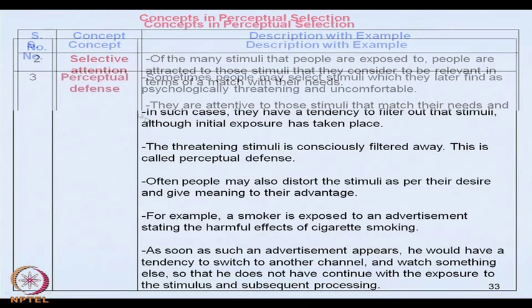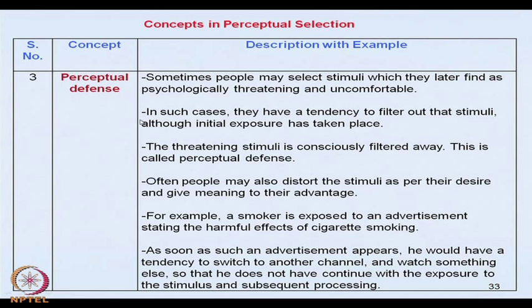The third concept is perceptual defense. Sometimes people may select stimuli which they later feel are psychologically threatening and uncomfortable. In this case, they have a tendency to block off such stimuli to which an exposure has taken place — the threatening stimulus is filtered away. This is called perceptual defense. For example, if there is a smoker who is exposed to an advertisement that talks about the harmful effects of cigarette smoking, he will immediately flip the pages in a newspaper, or change the channel on TV or FM. He wants to block away such stimuli from further exposure.